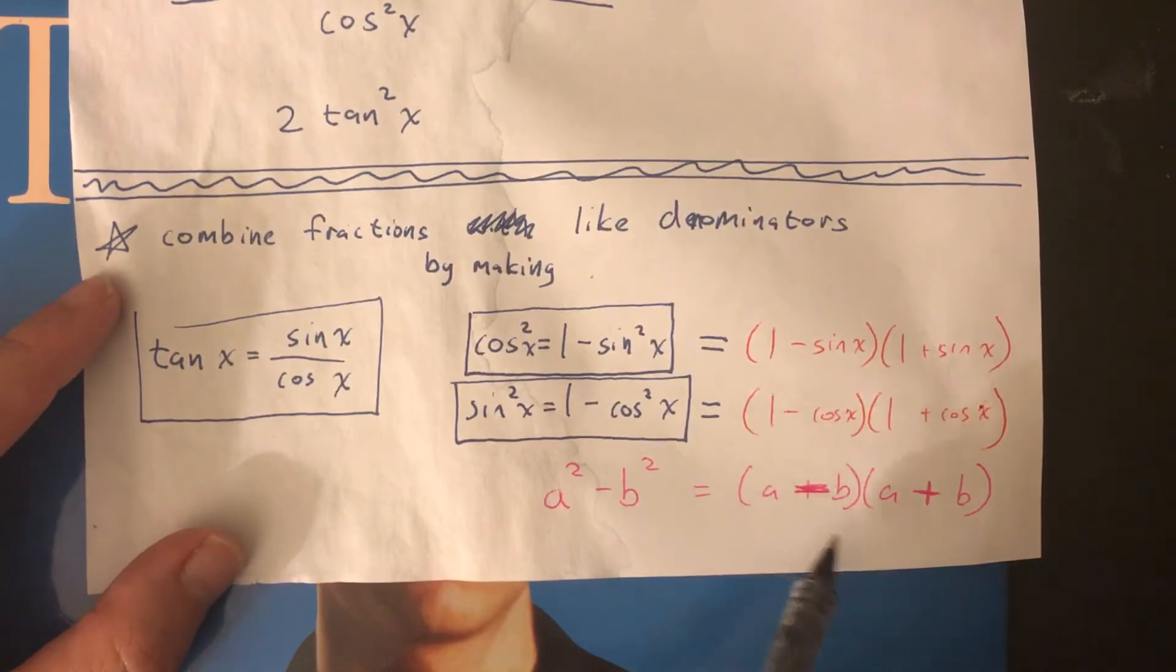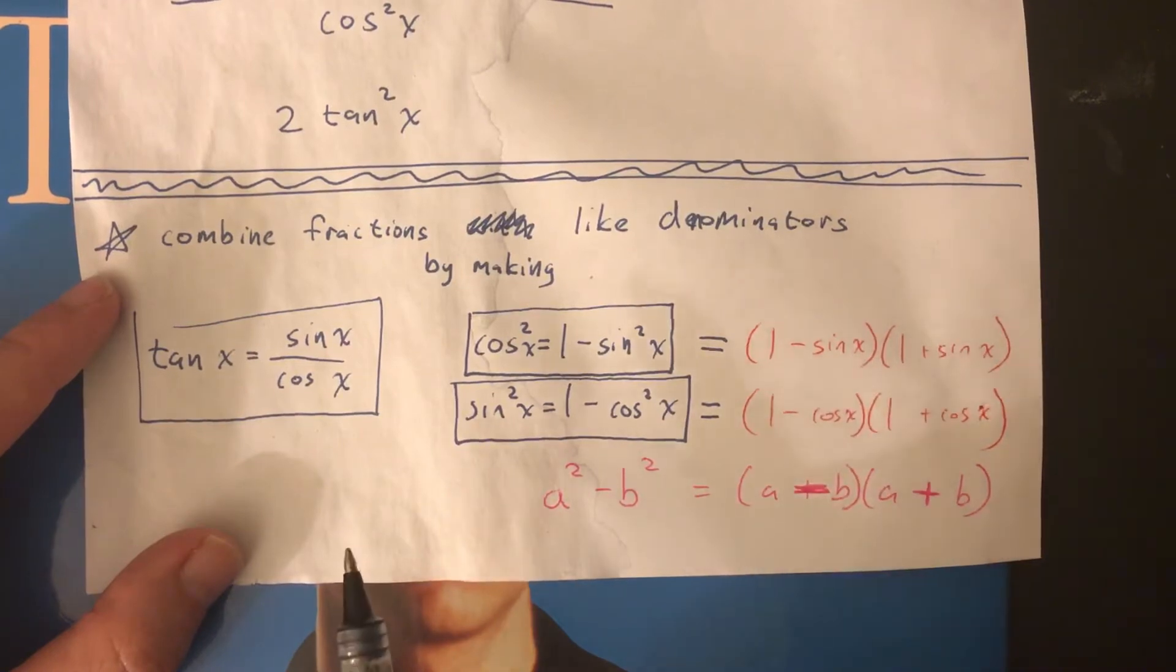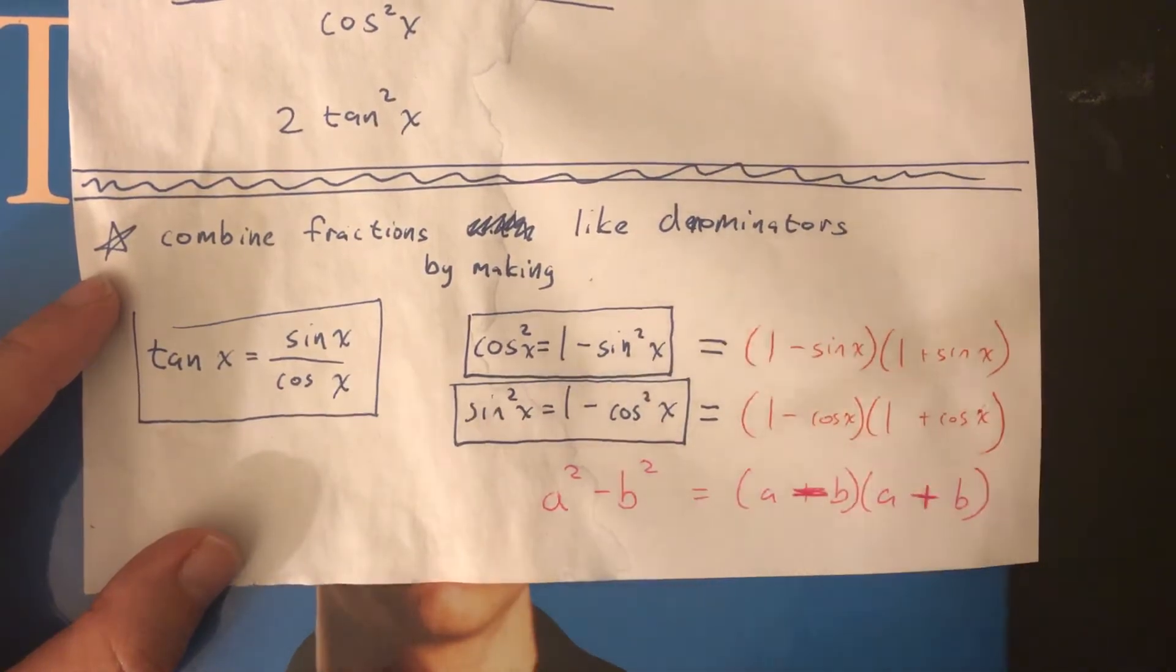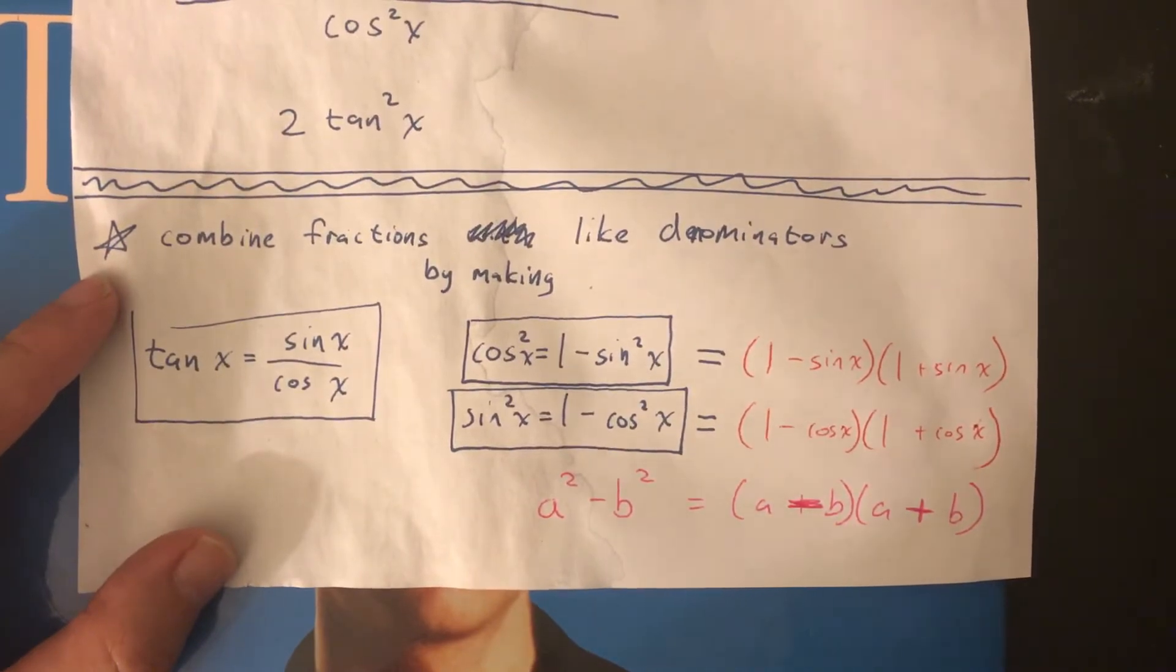So you can rewrite it as a minus b, a plus b, a.k.a. 1 minus sine x, 1 plus sine x. These are all options for you to experiment, manipulate, and change the expressions, always keeping the other expression, your goal expression, in mind.